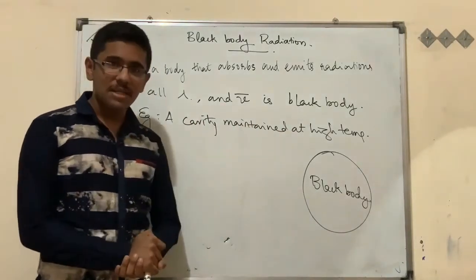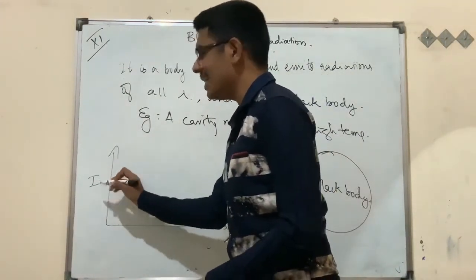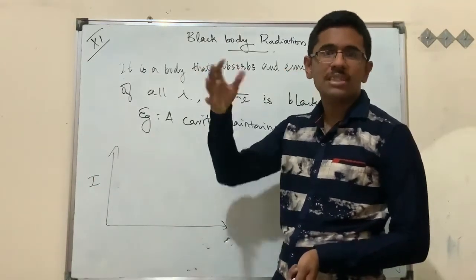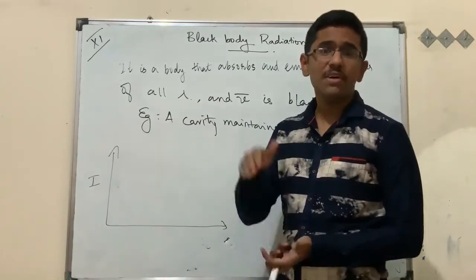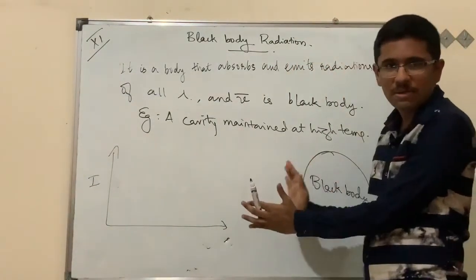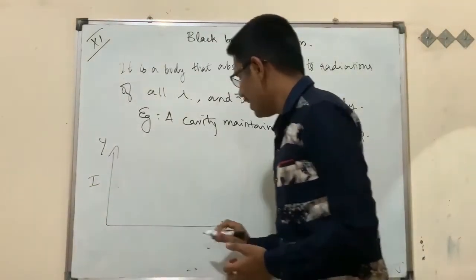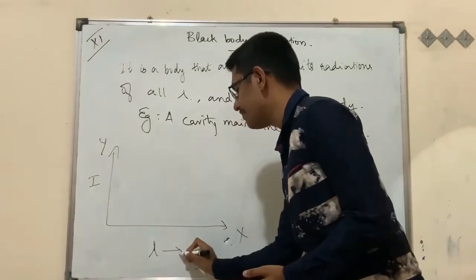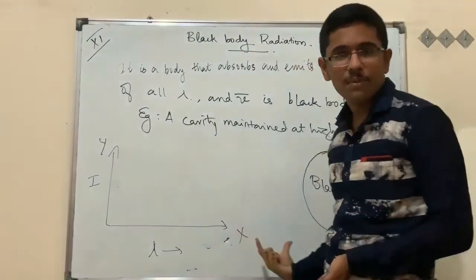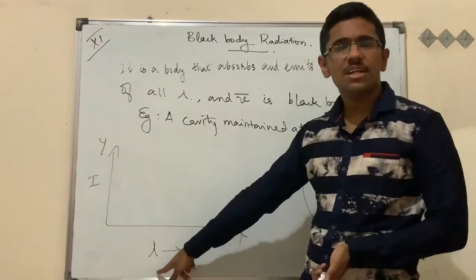An experiment conducted on a black body revealed interesting results. Here, intensity (I) refers to the brightness of light — more intensity means more brightness and less intensity means less brightness. In the experiment, intensity is plotted along the y-axis and the wavelength (lambda) of the black body radiation is plotted along the x-axis.